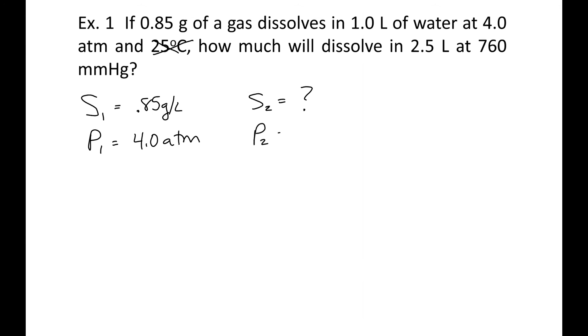Now, P2, 760 millimeters of mercury. I have two different pressure units. Well, since 760 millimeters of mercury, we know what that is in atmospheres. That's 1.0 atmospheres, because that's standard pressure. So you really don't have to convert as far as do the picket fence, because 760 equals 1 atmosphere. Now we're going to set up our little proportion. We're going to cross-multiply, so we're going to do 0.85 times 1 divided by 4.